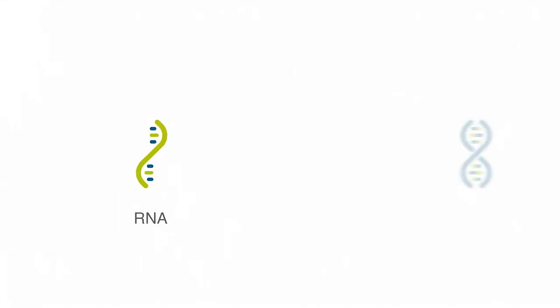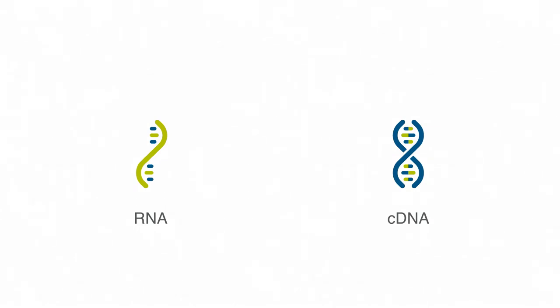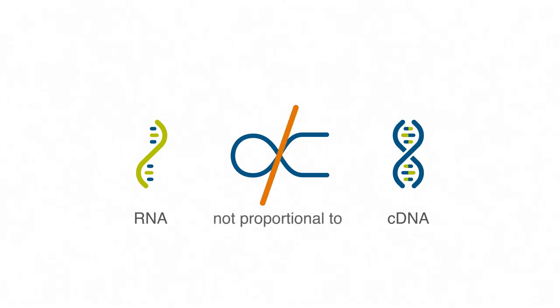When converting RNA to cDNA, nearly all reverse transcription enzymes have the potential to introduce RT bias. When this happens, the type and amount of cDNA generated won't correctly correlate with the amount of RNA in the sample.